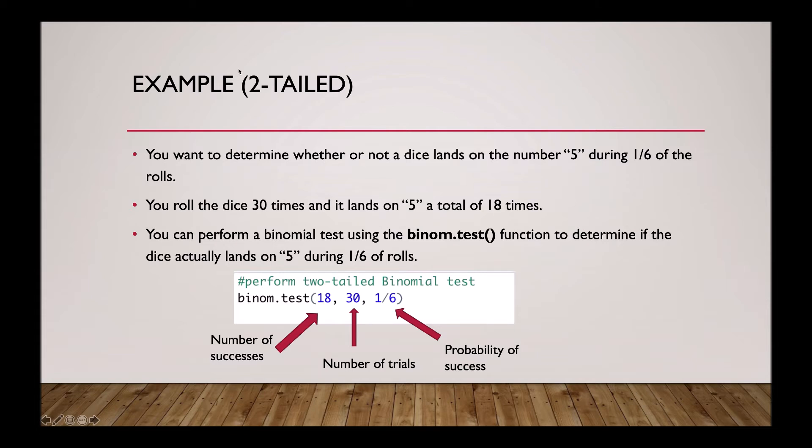The first number is the number of successes we had, so 18. The second number is the number of trials, so how many times we rolled the dice, so that's 30. And finally, the last number is the probability of success, which is 1 out of 6.